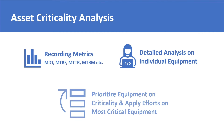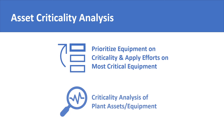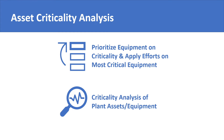Therefore, what is needed to be known is what are the most critical equipment in your plant or facility, and then you implement the reliability program or any advanced maintenance program on those most critical equipment first. This is where the criticality analysis comes in. It allows you to shortlist the equipment or assets over which you will direct your future focus and efforts in implementing an advanced maintenance program.